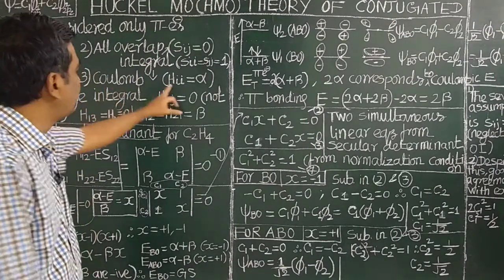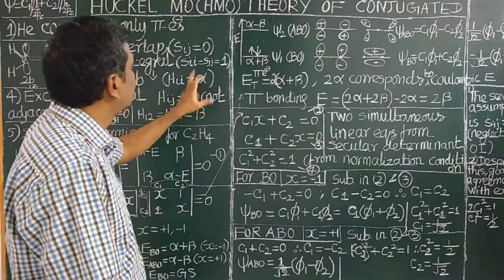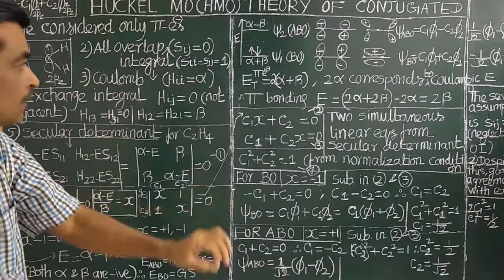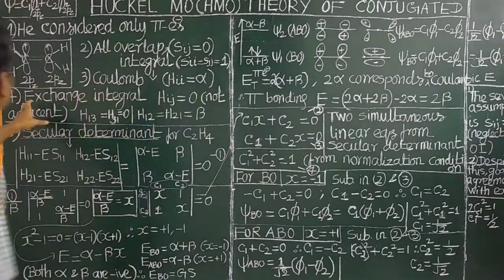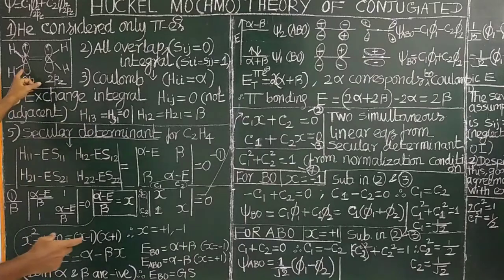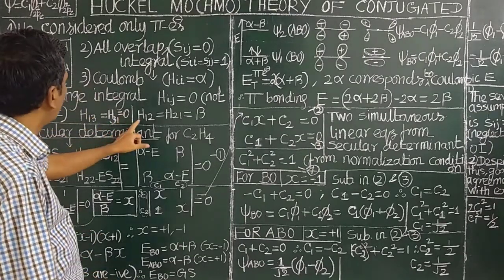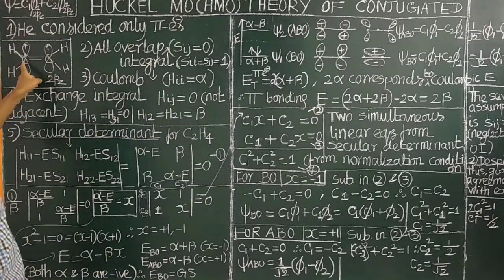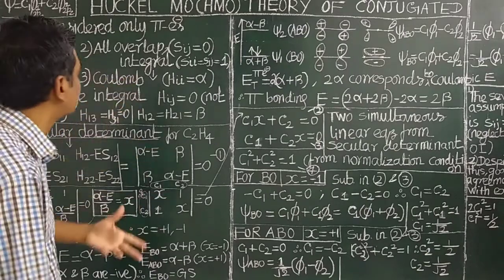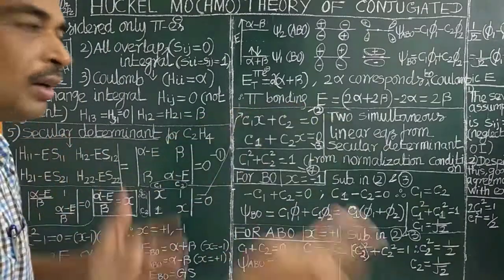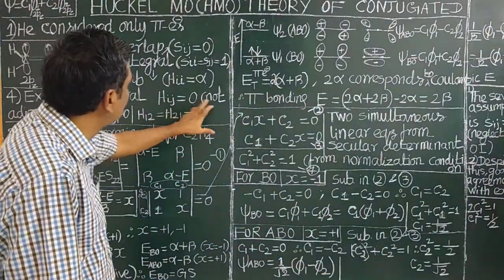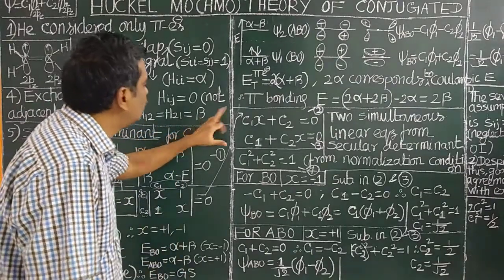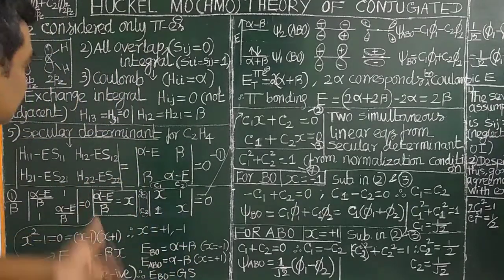The Coulomb integral H_ii is taken as alpha. The exchange integral, or resonance integral H_ij, is taken as beta if the carbon atoms i and j are adjacent. For example, in butadiene, atoms 1 and 2 are adjacent, so H_12 = beta. If the carbon atoms are not adjacent, such as positions 1 and 4 in butadiene, then H_ij is equal to zero.